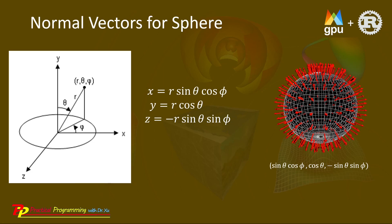In the spherical coordinate system, it can be written in this form: just sine theta cosine phi, cosine theta, minus sine theta sine phi. That is X, Y, Z normalized by R, to create vertex position data for our sphere.